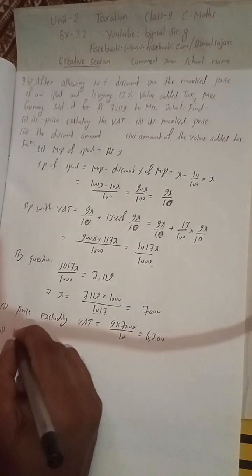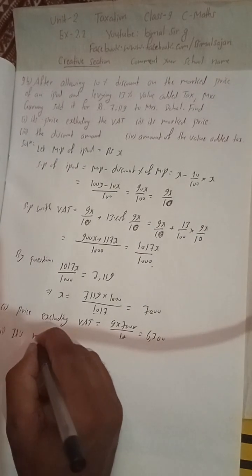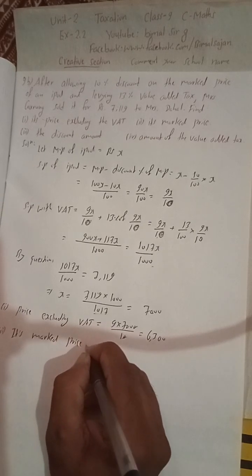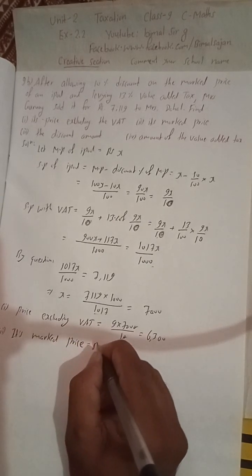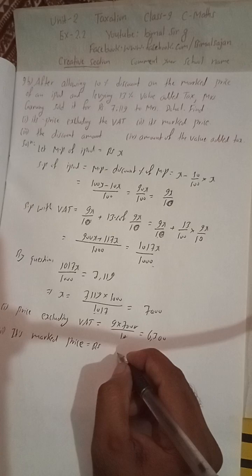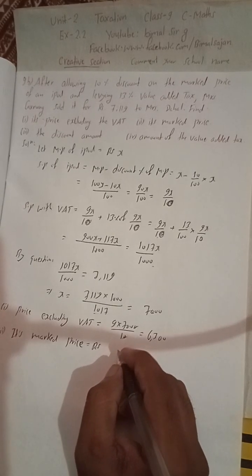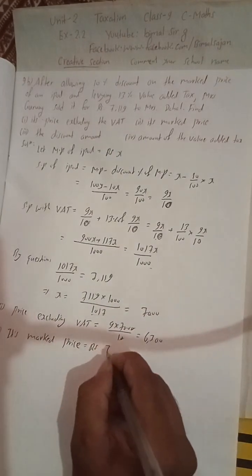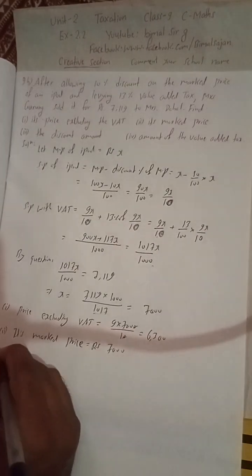Number two, its marked price. The marked price is x, which we have supposed, and this is 7000. Rs. 7000.